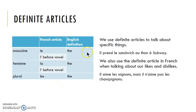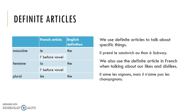The definite articles mean 'the.' We have le and la. They both become l'apostrophe before a vowel — a word that begins with a vowel sound. And we have les, which is plural. We use the definite articles to talk about specific things. So il prend le sandwich au thon à Subway — he has the tuna sandwich at Subway. So here we're being very specific; we're not talking about just any sandwich, we're talking specifically about the tuna one from Subway.